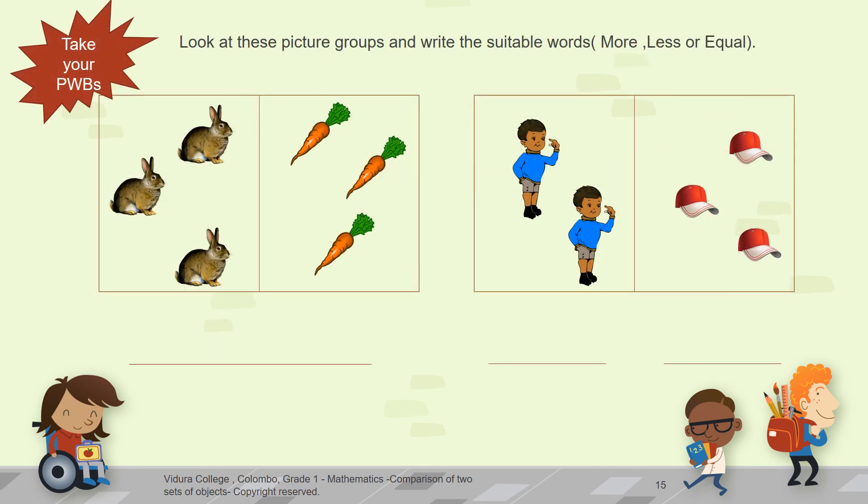Next one also a different question. Look at these picture groups and write the suitable words. More, less or equal. Compare the sets in rectangles and then write down the correct word under it. More, less or equal.